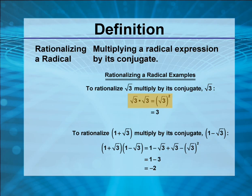The product of the square root of 3 and the square root of 3 is equal to the square root of 3 squared, which is equal to 3.